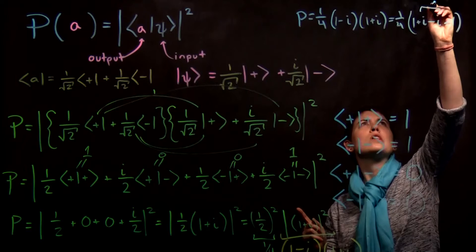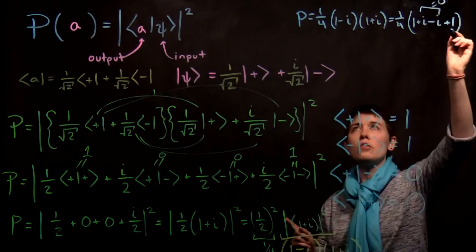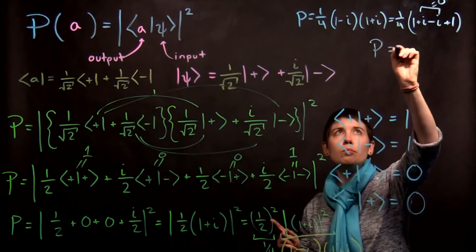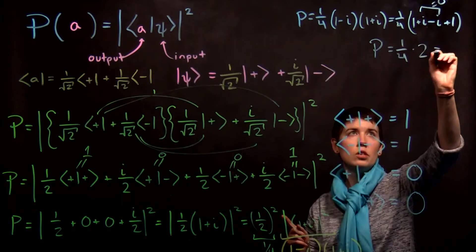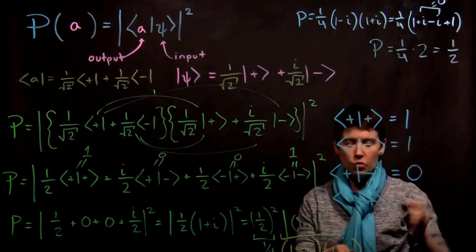So notice that these two equal zero because they cancel and then they're left with two. So this probability is one quarter times one plus one is two, which is one half.